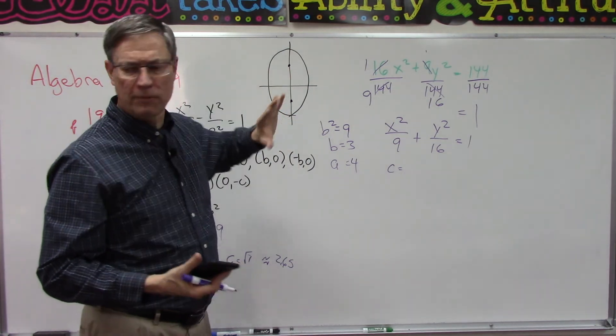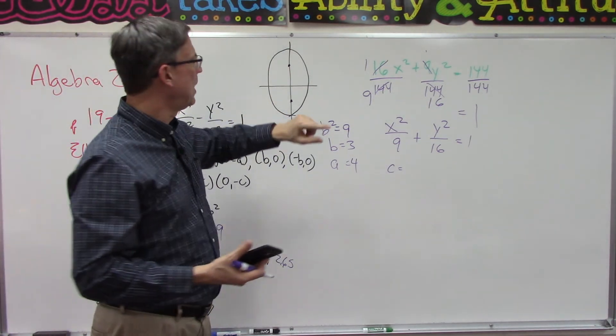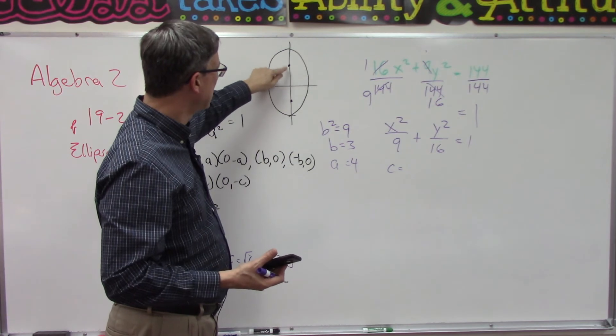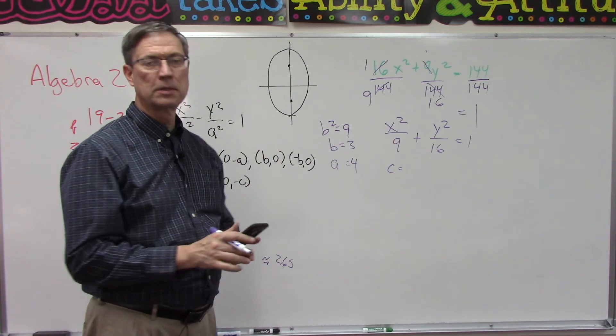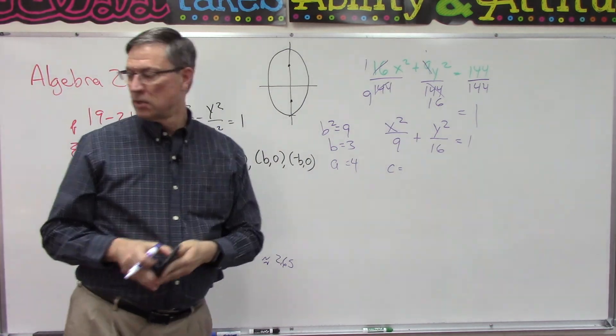So we could write c equals 2.65. They give you graph paper, and you're supposed to label that point. You can estimate where the focus would be on the axis.